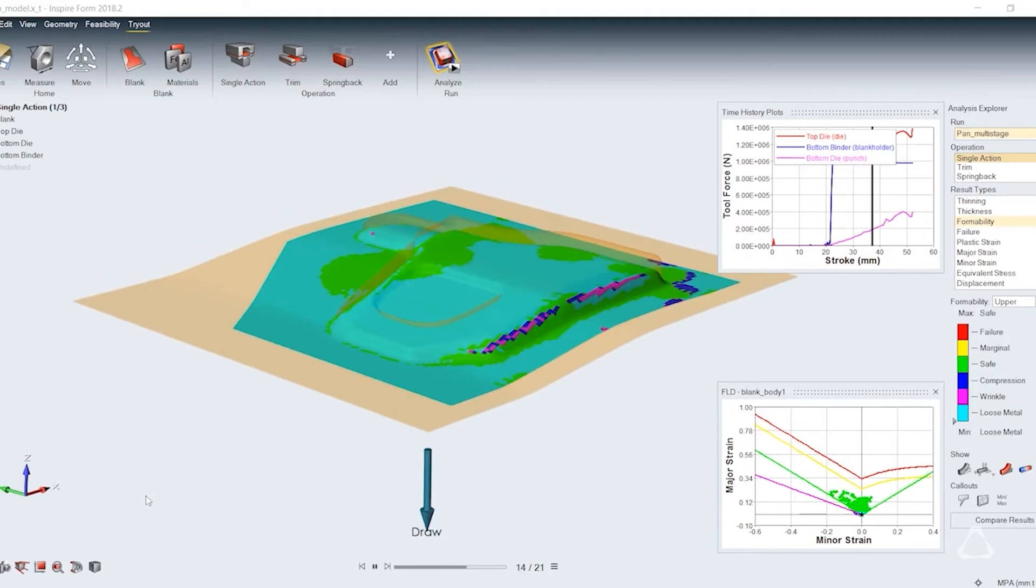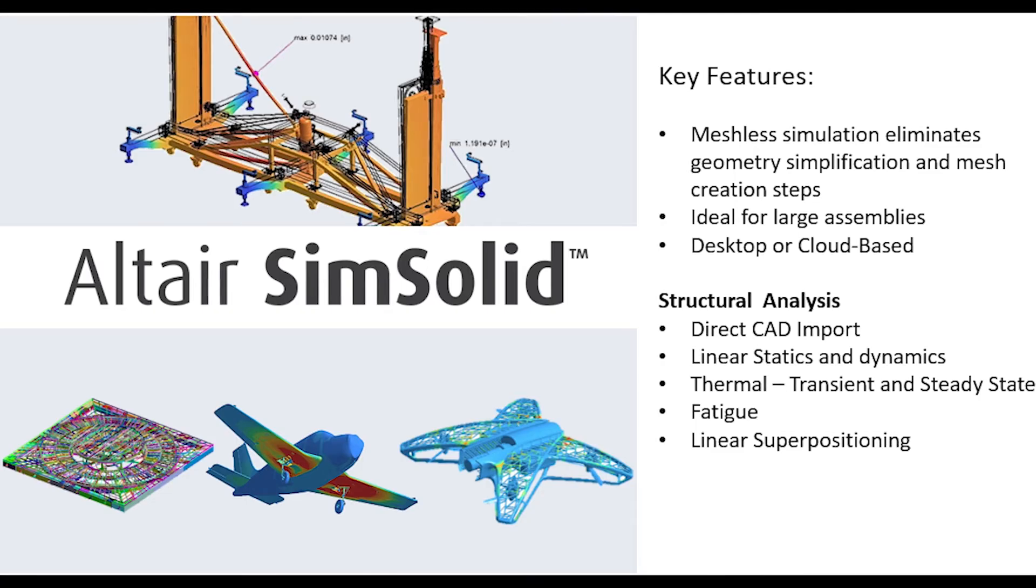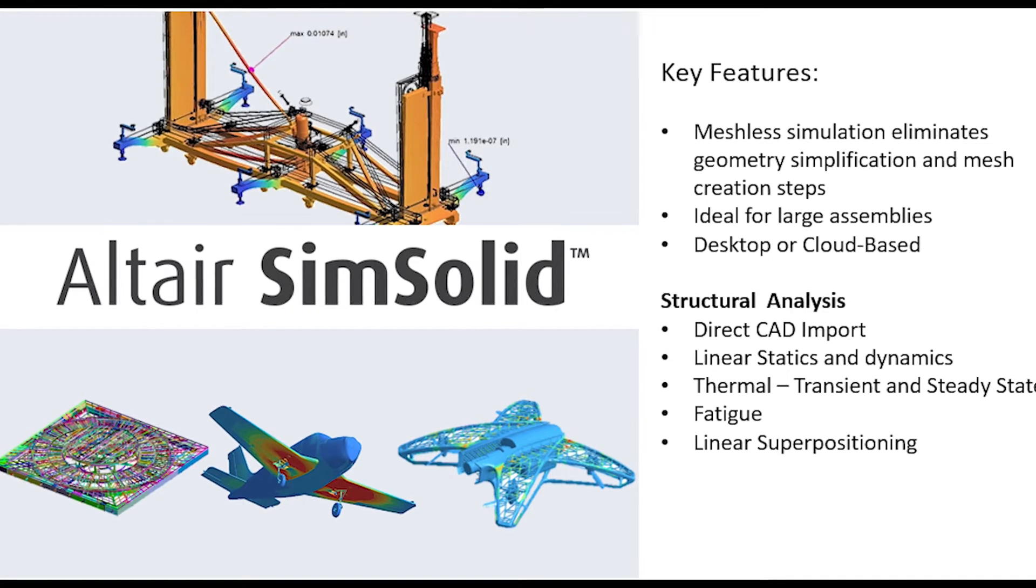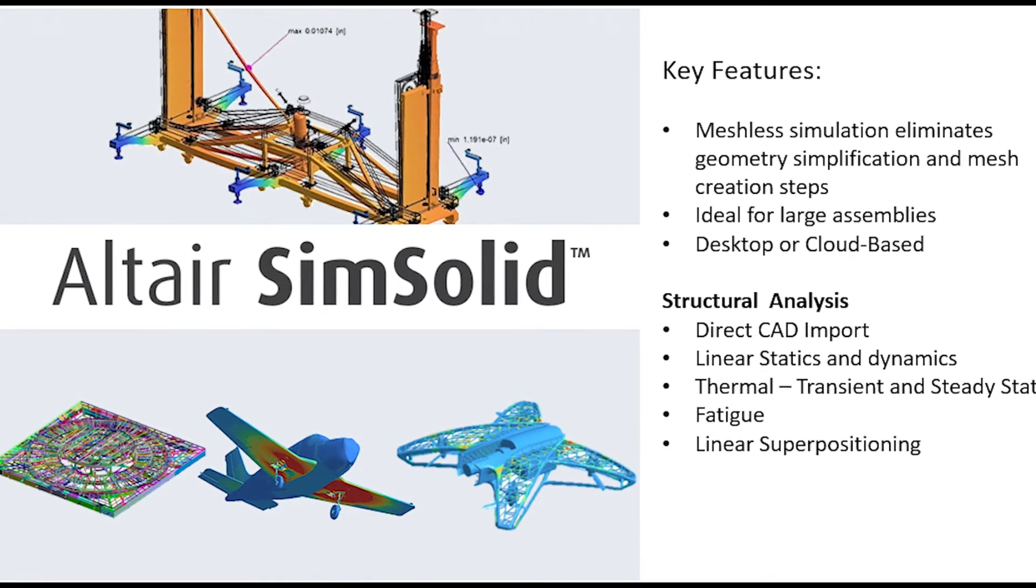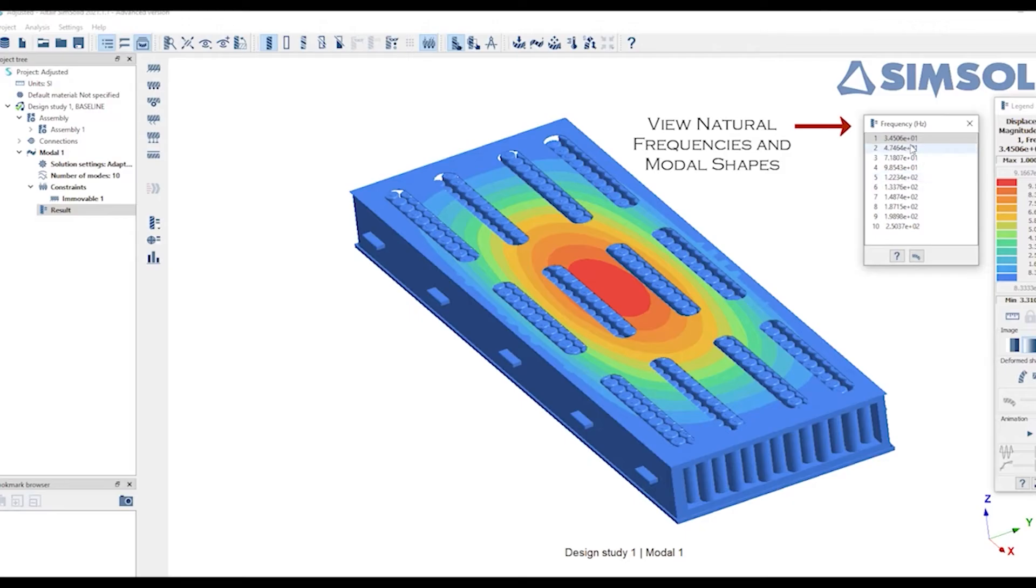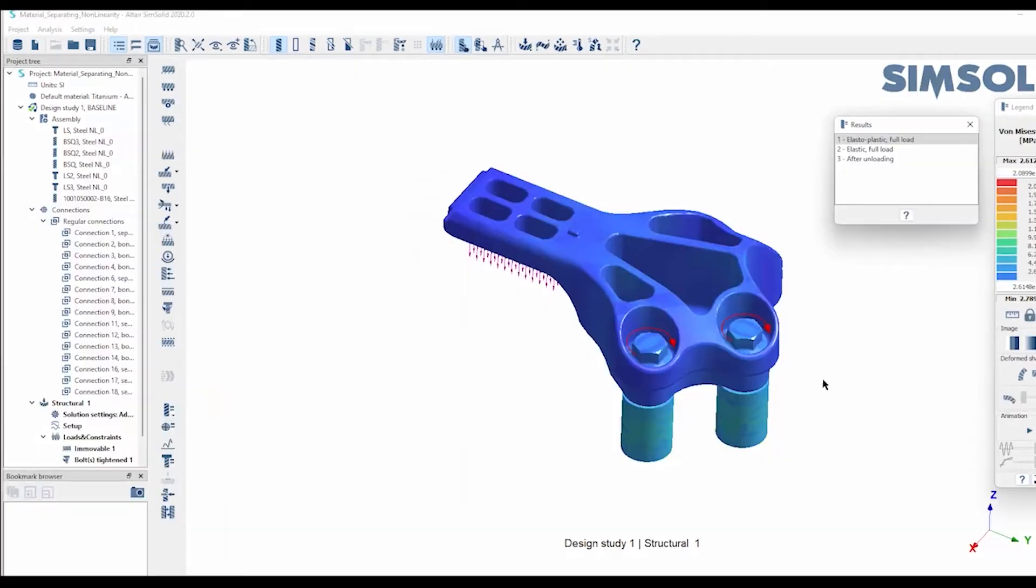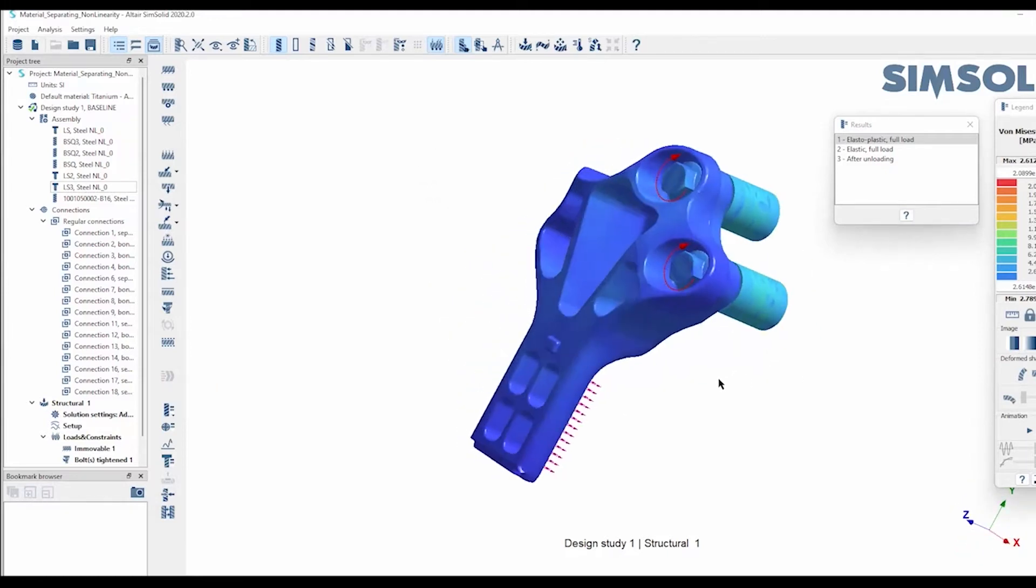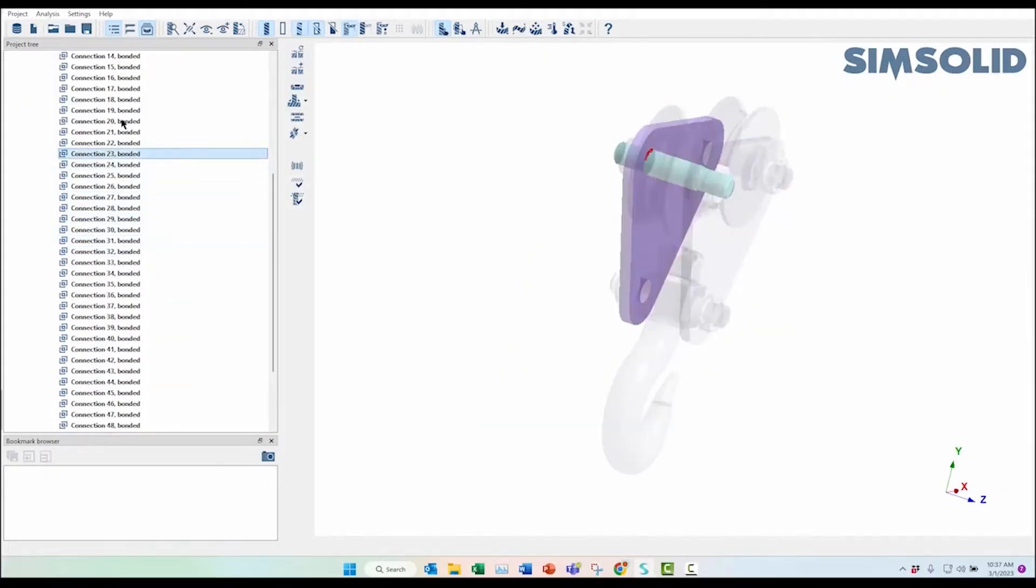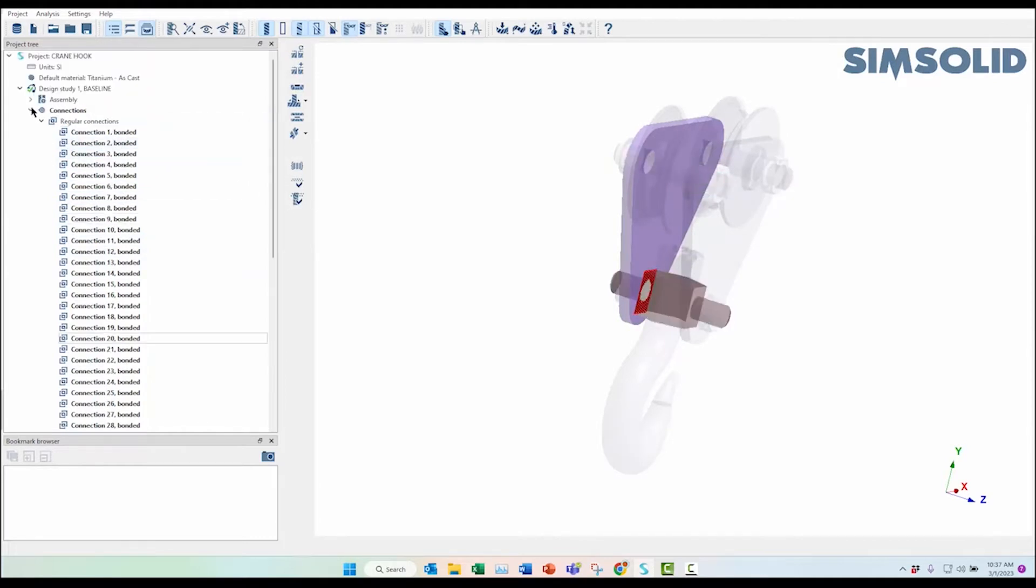Altair SimSolid is a product that has been gaining popularity over the last few years, mainly because it allows users to bypass some of the time-consuming and error-prone steps that are typically associated with simulation. SimSolid is a meshless simulation tool, so users don't have to worry about simplifying their geometry or creating a mesh. They can move right into setting up their study. Because it doesn't create a mesh, it's also widely used for large assemblies because you can get answers in seconds rather than minutes or hours.